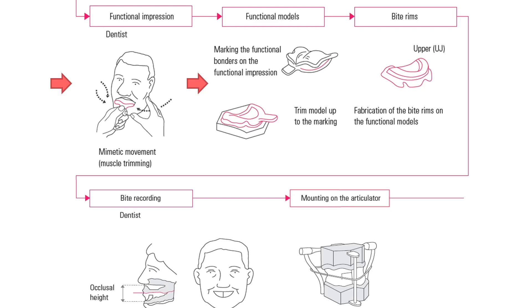Once the master cast is done, we make the denture base using self-cure acrylic or any temporary denture base material, and then fabricate the occlusal rims on both the maxillary and mandibular denture bases. On the patient's third visit, the doctor evaluates vertical dimension, checks aesthetics and phonation, and various markings are made on the occlusal rims.